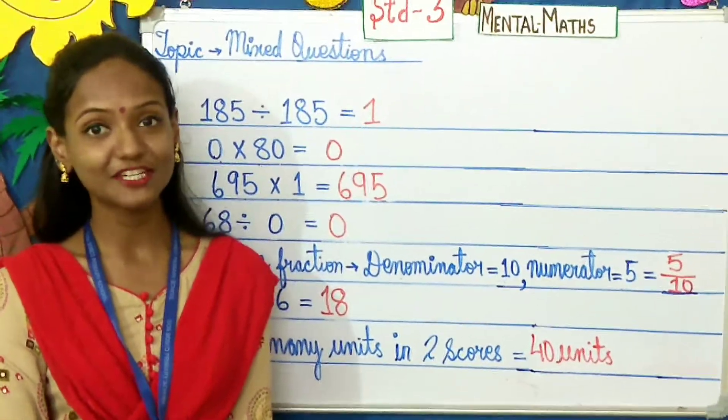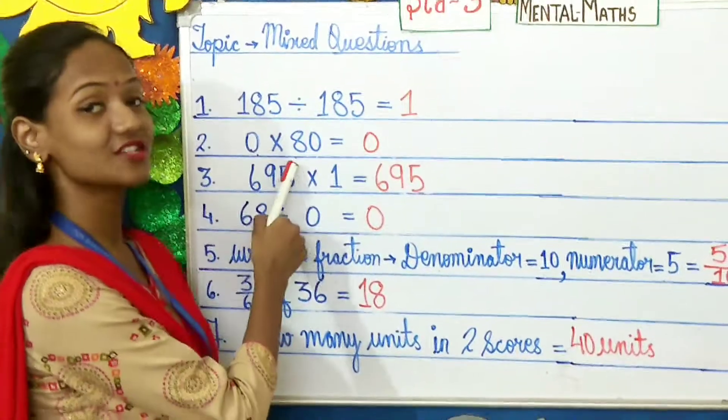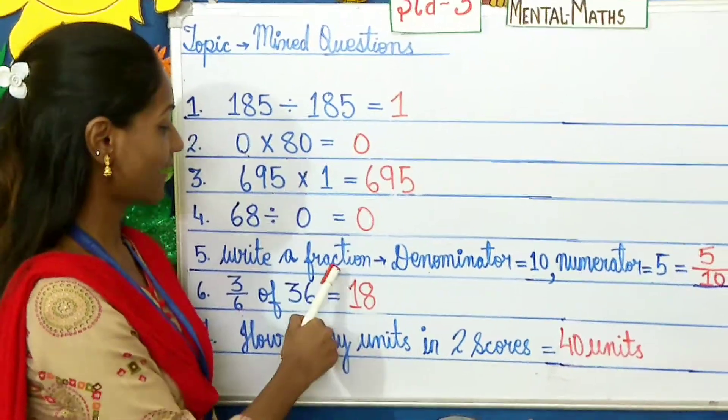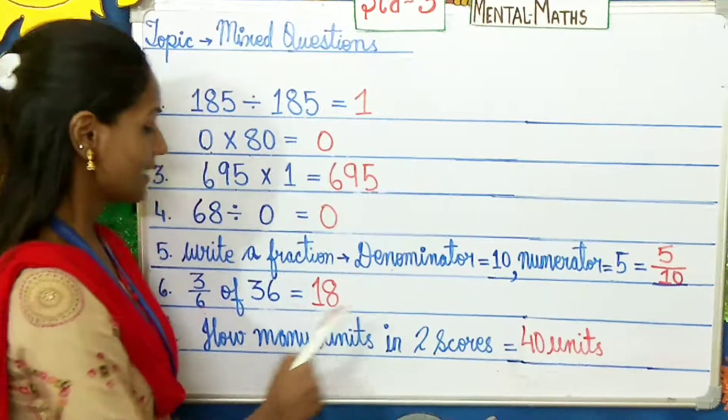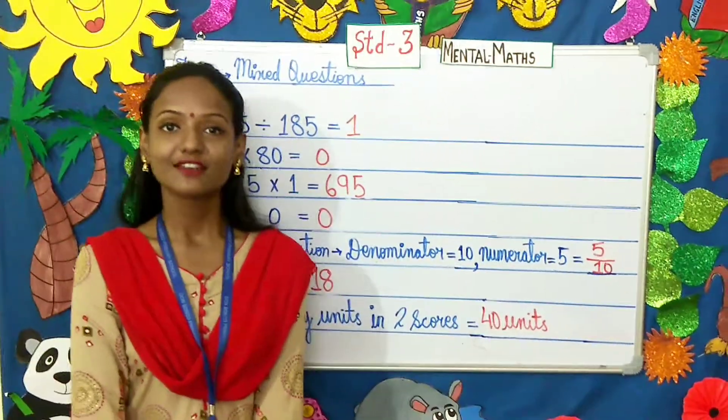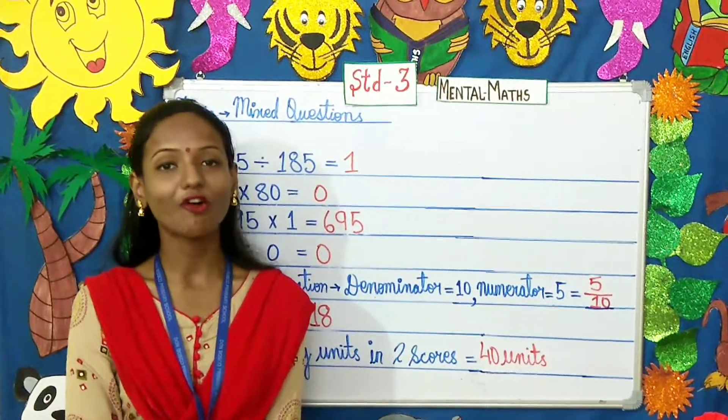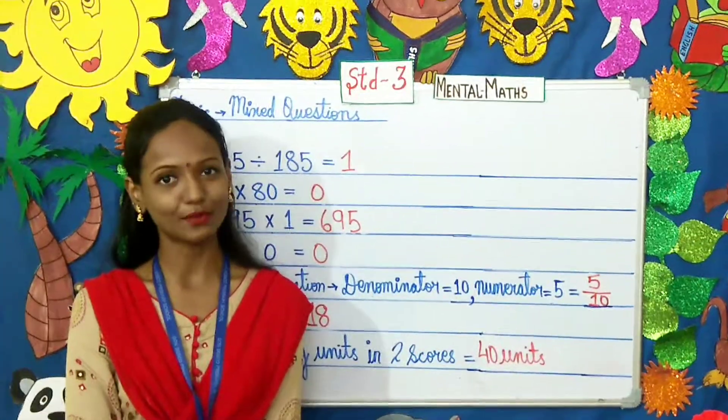So, children, let us recap quickly. What did we study today? We saw properties of division, properties of multiplication, fractions, numerator and denominator, and units and scores. Related to these, worksheets will be uploaded on your school website. Kindly go through it and study well. Thank you.